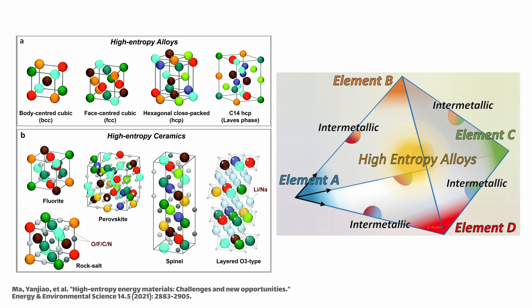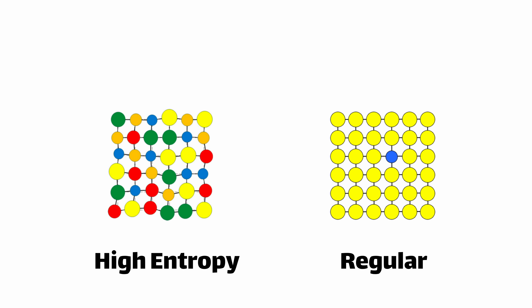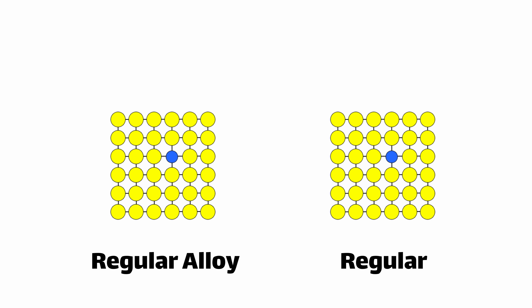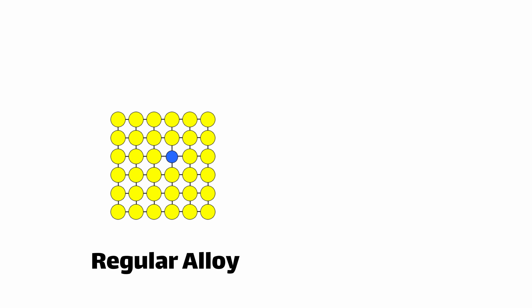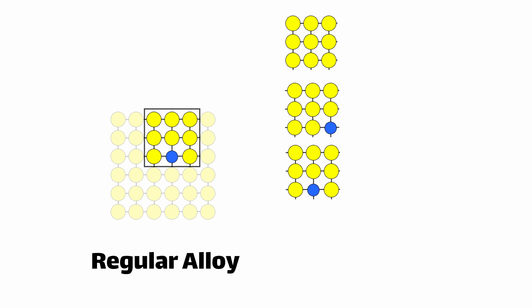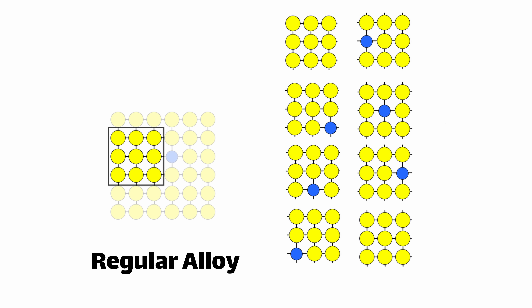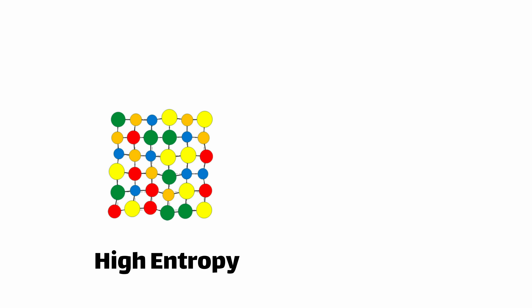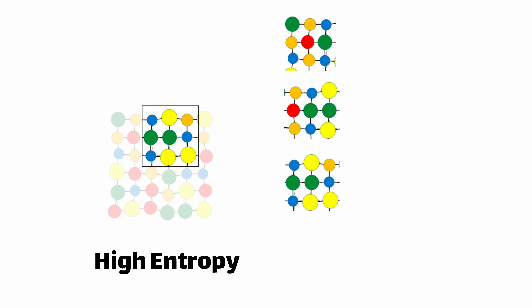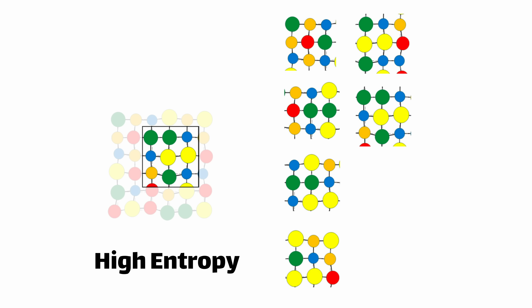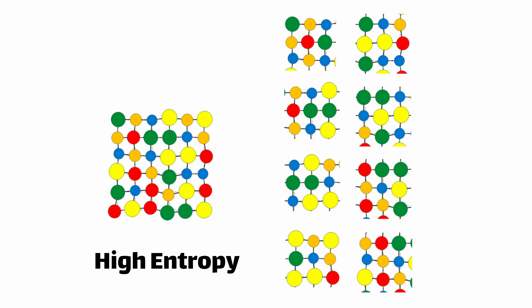What makes these new alloys so fascinating is that each position on the crystal structure has a unique local environment. Typically an alloy will have 95% one element and then small substitutions, so an atom either sees all surrounding neighbors being the same as it or has one substituted element. But in high entropy situations, every single location in the crystal structure across the whole alloy is probably unique because it has a different element on each surrounding corner.